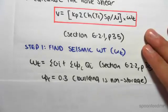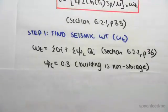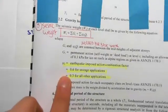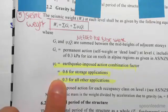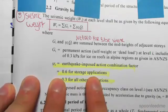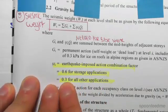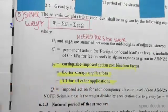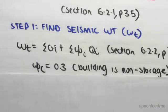The first thing we're doing is finding the psi c value. In that same section, it told us psi c. For our case, we're looking at when our building isn't storage, it's just a normal office building. So our psi c value is 0.3. The building is non-storage.